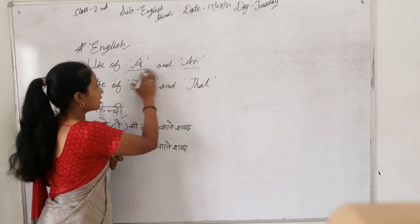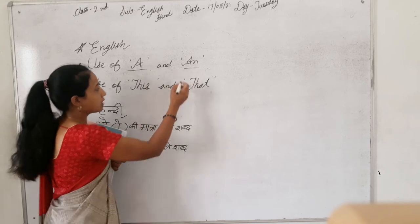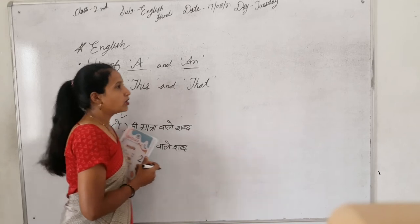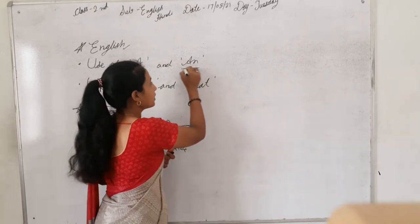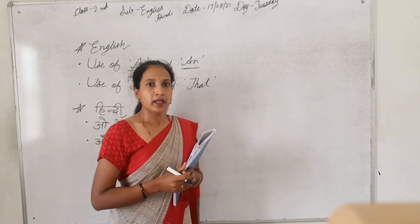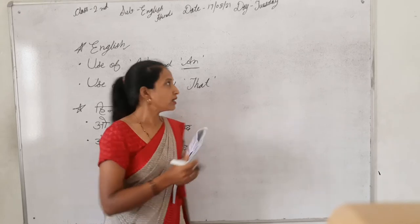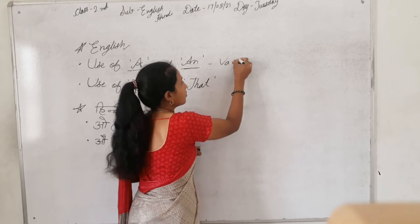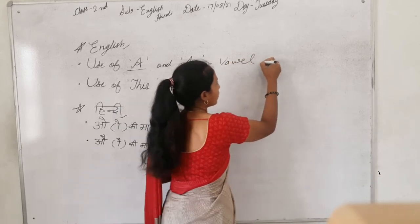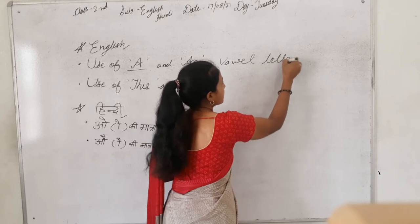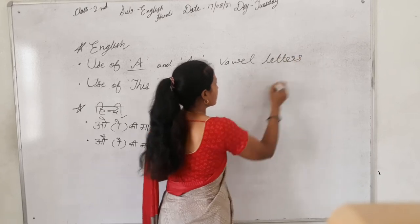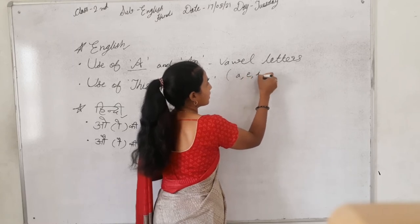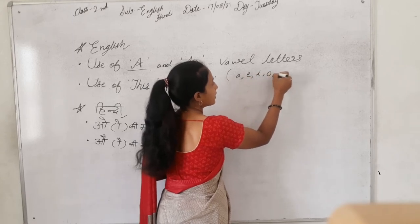In Articles, where do A and AN go? For AN, what will the letter be? It is a vowel — a vowel alphabet or vowel letter. The vowel letters are: A, E, I, O, and U.